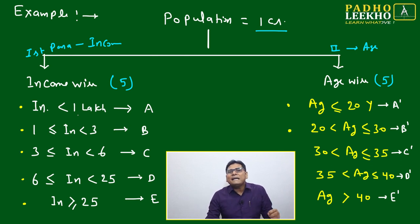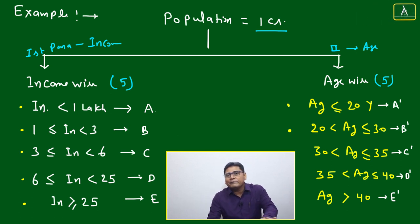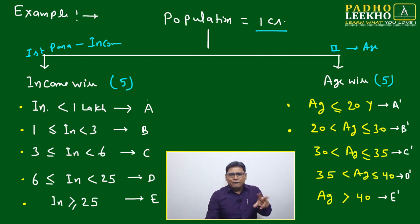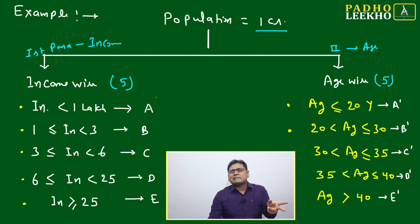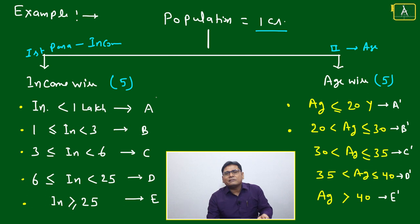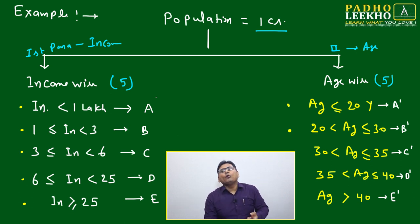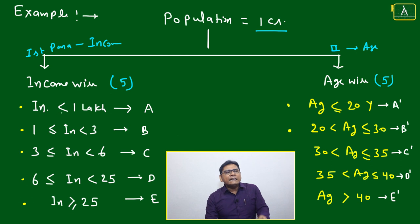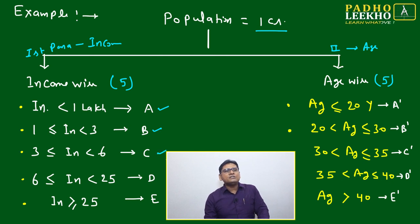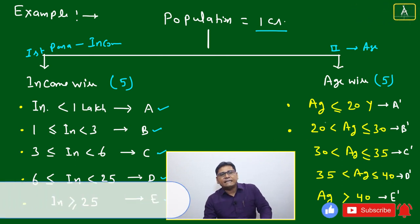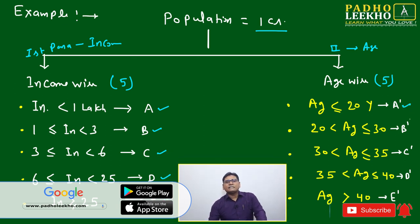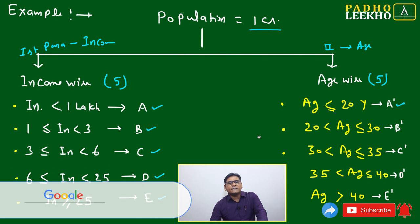If you change the number of segments, questions can still be created for a DI case let, but the base may change for a few parameters, making it a little more difficult to create a good-level case let. Generally, I like T4 type of case lets — x in y, y in x — where the variables under x and y are kept the same. So here, income-wise five segments and age-wise five segments: income less than 1 lakh is segment A, 1 to 3 lakhs is B, 3 to 6 is C, 6 to 25 is D, and more than 25 lakhs is E.